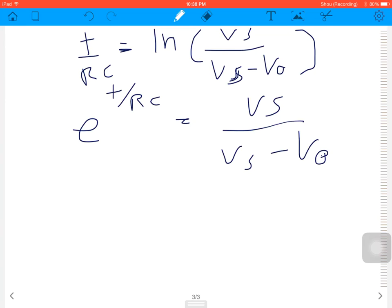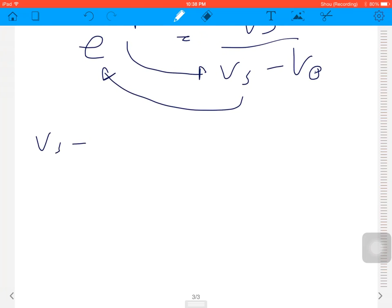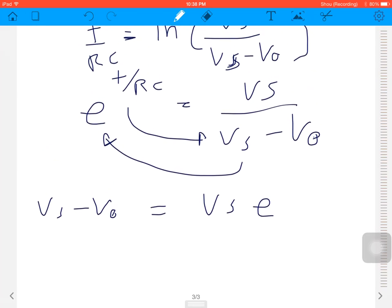And next step, I will move this to this side and move this to this side. VS minus V out equals VS times e to the power of minus t over RC.